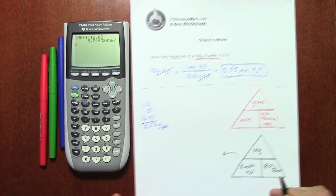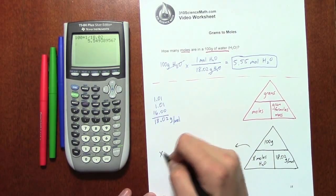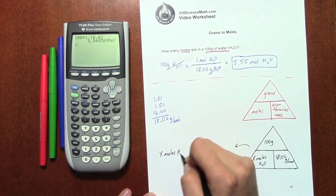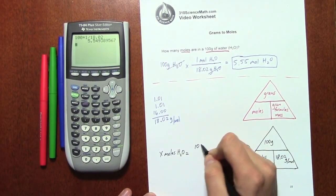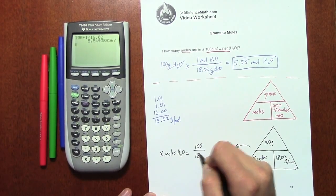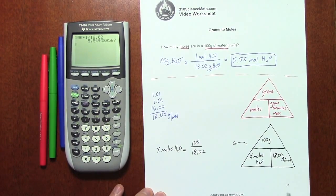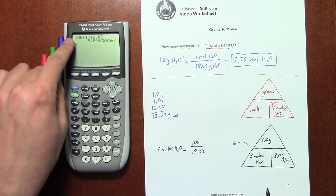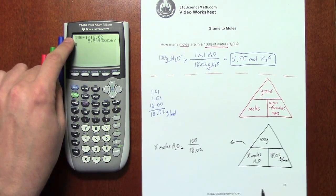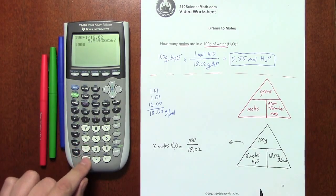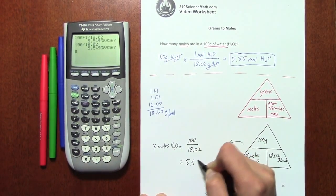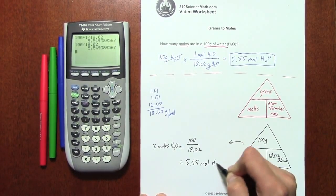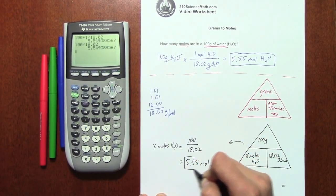So the way that we're going to set this up is very simple. We're going to write x moles of water, H2O, and we're going to set that equal to 100 over 18.02. And it's basically what we did on the calculator when we were solving the dimensional analysis method. But just to prove it to you, we'll take 100 divided by 18.02, and voila, you get the exact same answer. So 5.55 moles of water, and that is our final answer.